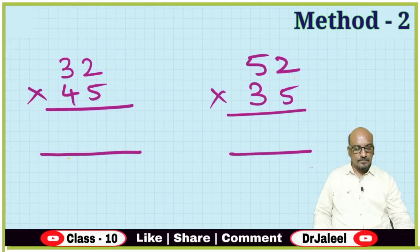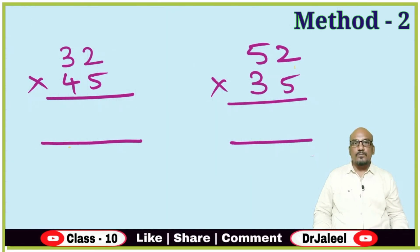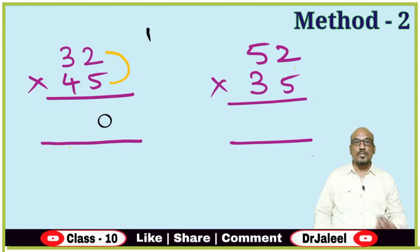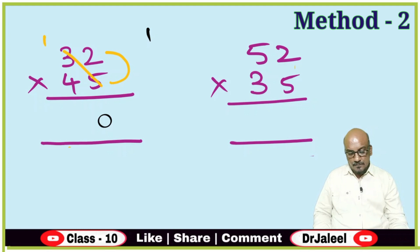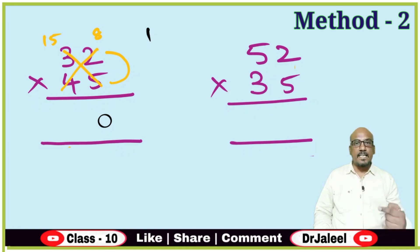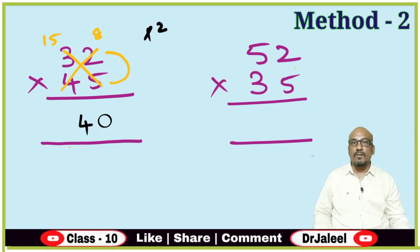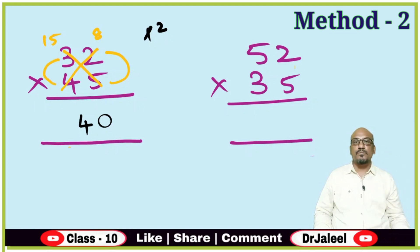Let us go for more examples — 45 × 32. First, right side digits: 5 × 2 is 10. Write 0 here and carry forward 1. Second step, cross multiplication: 5 × 3 is 15 and 4 × 2 is 8. Total 15 plus 8 is 23, plus 1 carry forward is 24. Write 4 here and carry forward 2. Third step, left side digits: 4 × 3 is 12, plus 2 carry forward is 14. So the answer is 1440.